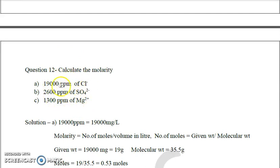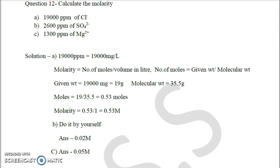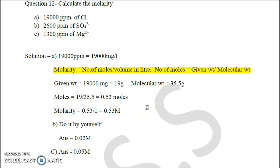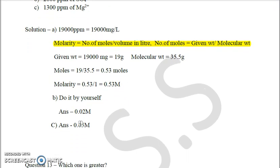The next question asks to calculate the molarity of 19,000 ppm of chloride. This means 19,000 milligram per liter of chloride, which is 19 grams per liter. Molarity equals moles divided by volume in liters. Number of moles equals given weight divided by molecular weight: 19 g divided by 35.5 g/mol (molecular weight of chloride) equals 0.53 moles. So molarity is 0.53 mol per 1 liter, which is 0.53 M.